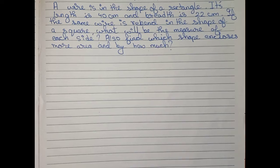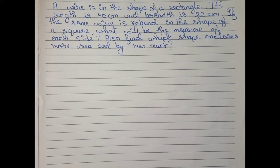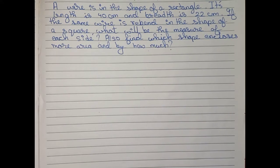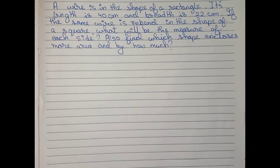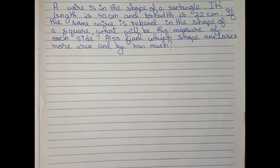Hello guys, welcome to this video. In this video, our question is: a wire is in the shape of a rectangle. Its length is 40 centimeter and breadth is 22 centimeter. If the same wire is rebent in the shape of a square, what will be the measure of each side? Also find which shape encloses more area and by how much.